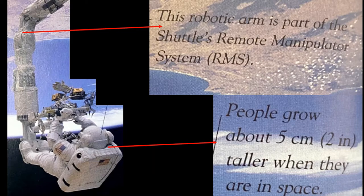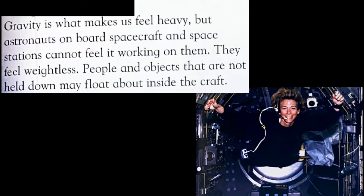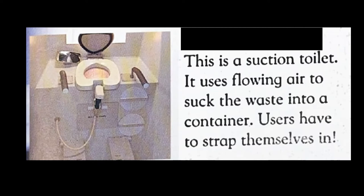People grow up to about five centimetres or two inches taller when they are in space. This is the first section without a heading — you have to figure out which heading will go for this section. Astronauts have a supply of specially prepared meals that they either heat up or add water to before eating. Some food and drinks are ready to consume straight away. Gravity is what makes us feel heavy. For astronauts on board spacecraft and space stations, they cannot feel it working on them — they feel weightless. People and objects that are not held down may float about inside the craft. An astronaut's bed is a sleeping bag with body straps to keep people from floating around as they rest. The crew always keep the lights on so eye shades are also needed. There is a suction toilet that uses flowing air to suck the waste into a container — users have to strap themselves in.